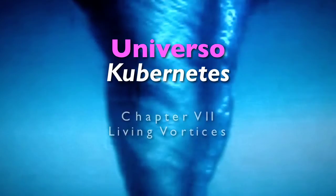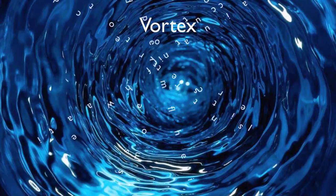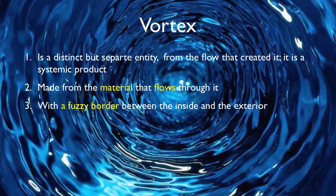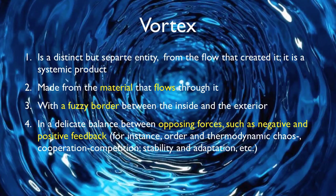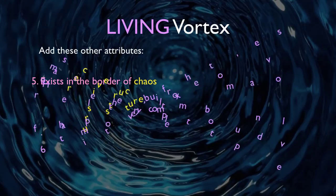Part 2, The Miracle of Life. Chapter 7, Living Vortices. What is a vortex? How are they defined? Is a human being a vortex, literally speaking? The dictionary tells us that a vortex is synonymous with whirlpool, hurricane, tornado — a distinct but separate entity from the flow that created it. It is a systemic product made from the materials that flow through it, has a fuzzy border separating the inside and the outside, and is the product of a delicate balance between opposing forces such as negative and positive feedback, order and disorder, cooperation and competition, stability and adaptation. Now let's add features 5, 6, and 7, which are needed to produce a living vortex, as identified by chaos theory.